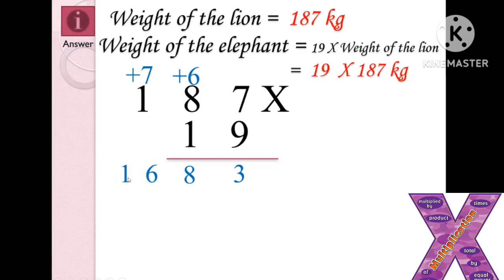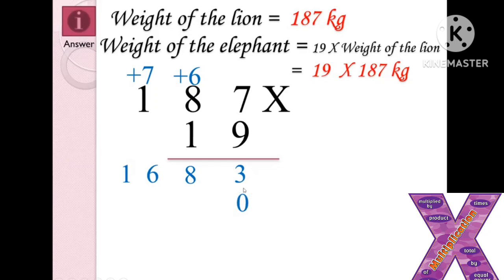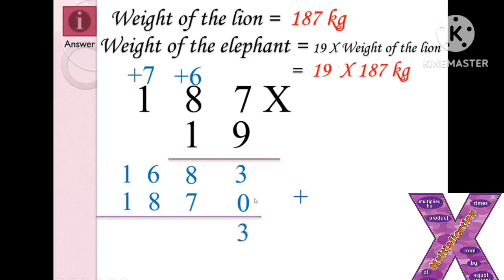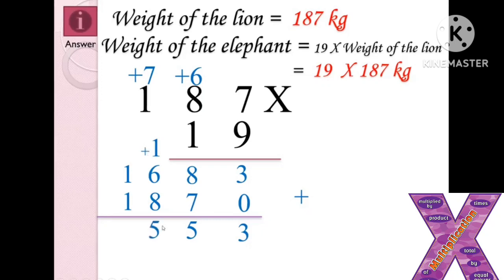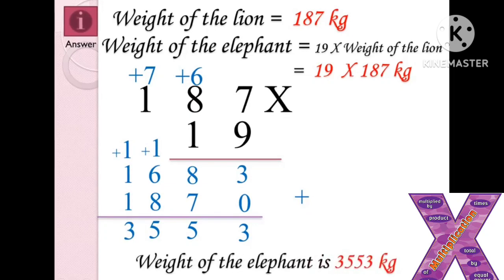For the second step we multiply by 1, since 19 is 10 plus 9. We've completed multiplication by 9, now we multiply by 10 — add 0 first, then multiply: 1 times 7 is 7, 1 times 8 is 8, 1 times 1 is 1. Now we add: 0 plus 3 is 3, 8 plus 7 is 15 — write 5, carry 1 — 6 plus 8 is 14, plus 1 carry is 15 — write 5, carry 1 — 1 plus 1 plus 1 is 3. The weight of the elephant is 3553 kilograms. I hope it will be useful, thank you.